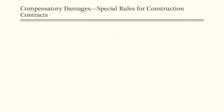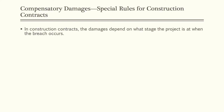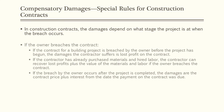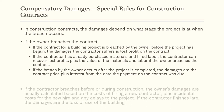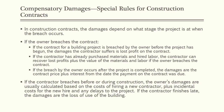There are also special rules for construction contracts. Compensatory damages depend on the stage of the project at breach. If the owner breaches before the project has begun, the contractor recovers lost profit. If materials and labor have already been committed, the contractor recovers lost profits plus the value of materials and labor. If the breach occurs after project completion, damages are the contract price plus interest from the due date. If the contractor breaches before or during construction, the owner's damages are the cost of hiring a new contractor plus incidental costs and delays. If a contractor finishes late, damages are the loss of use of the building.